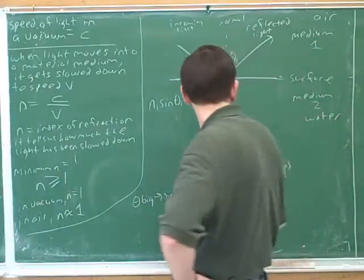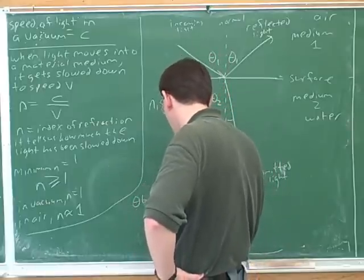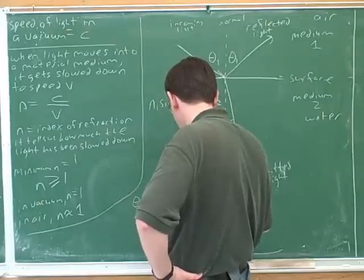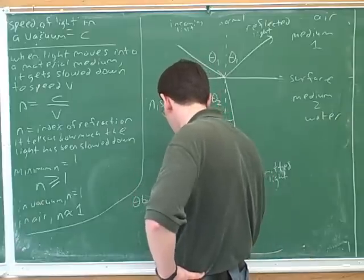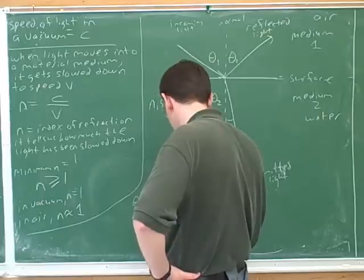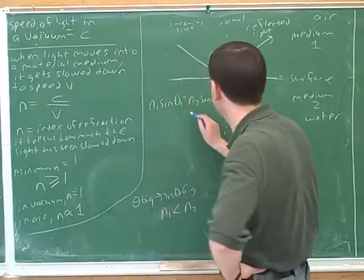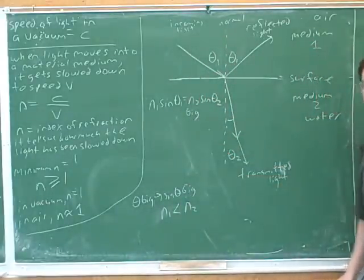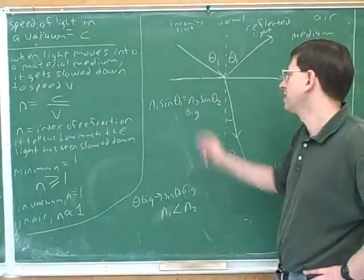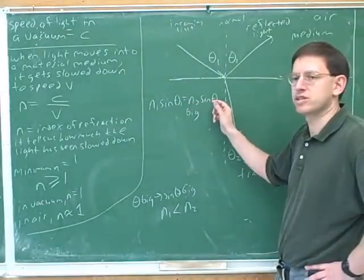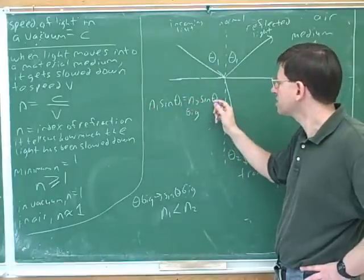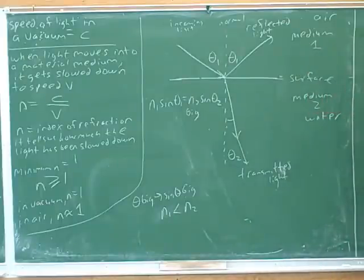So now what does that mean? Suppose that we're moving into a medium where n2 is bigger than n1. Suppose we're moving into a medium with a bigger index of refraction. Well, if n2 is big, is theta 2 going to have to be big or small? If n2 is bigger than n1, is theta 2 going to have to be bigger or smaller than theta 1?